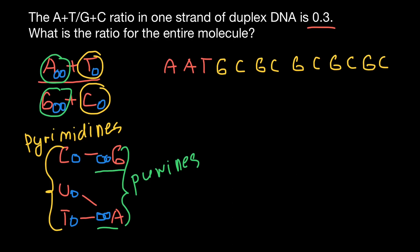We have 3 bases which are adenine or thymine, and we have 10 bases which are guanine and cytosine. Our ratio is 3 to 10 — so 3 divided by 10 equals 0.3. This confirms the ratio on one strand of the duplex DNA of adenines and thymines to guanines and cytosines.